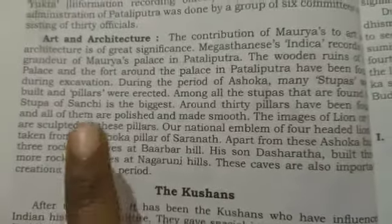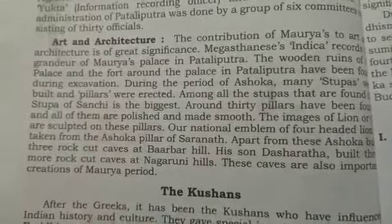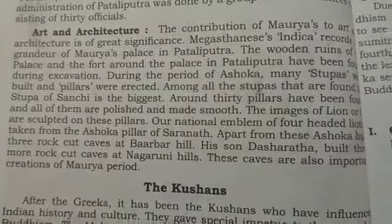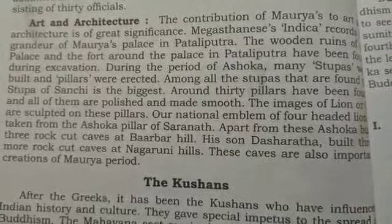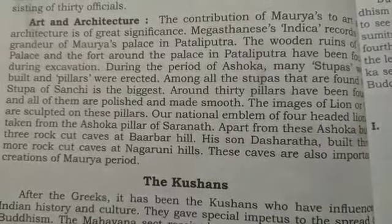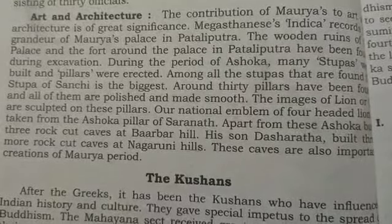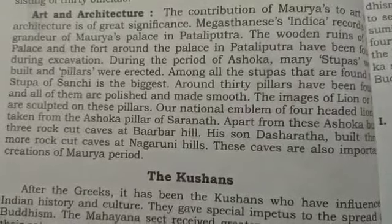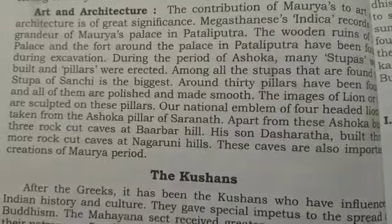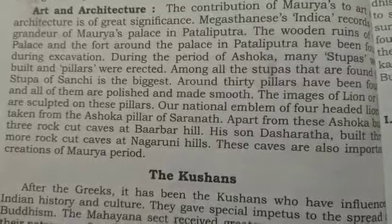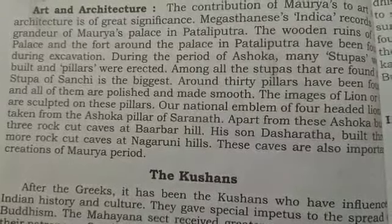During Ashoka's reign, many stupas were built and pillars were erected. Among all the stupas, the biggest is the Sanchi stupa. Around 30 pillars have been found — polished and made smooth. The lion sculpture on the pillars forms our national emblem, which was taken from Ashoka's Sarnath pillar. That four-headed lion image has been taken from the Sarnath pillar.